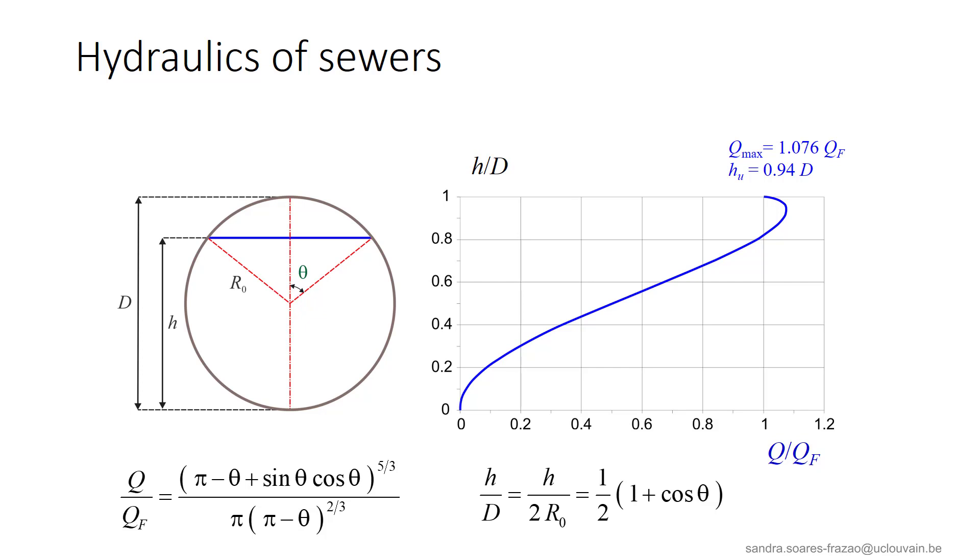How can this be explained? Remember that the uniform flow equation is the result of an equilibrium between a driving force, that is the gravity entraining the mass of water downslope and the friction forces that tend to slow down the flow. The driving force related to the mass of water is represented by the wetted area A, while the braking force is represented by the wetted perimeter P, along which the friction is exerted.